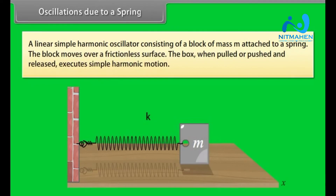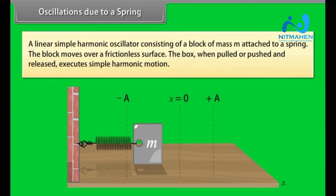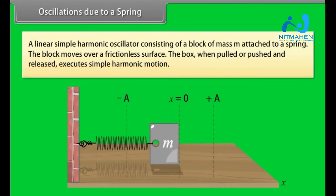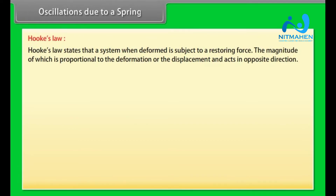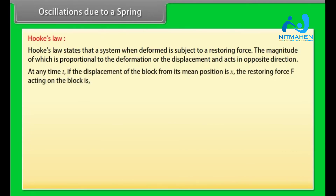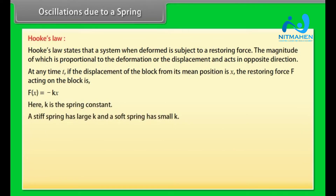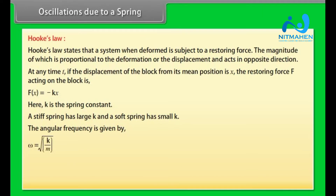Oscillations due to a spring: a linear simple harmonic oscillator consists of a block of mass M attached to a spring, moving over a frictionless surface. When pulled or pushed and released, it executes SHM. Hooke's law states that a deformed system is subject to a restoring force proportional to the displacement and in the opposite direction: F(x) = −Kx, where K is the spring constant. A stiff spring has a large K; a soft spring has a small K. For this system, angular frequency ω = √(K/M) and time period T = 2π√(M/K).